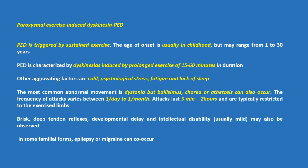PED is triggered by sustained exercise. The age of onset is usually in childhood but may range from 1 to 30 years. It is characterized by dyskinesias induced by prolonged exercise of 15 to 60 minutes in duration. Other aggravating factors include cold, psychological stress, fatigue and lack of sleep. The most common abnormal movement is dystonia, but ballismus, chorea or athetosis can occur.